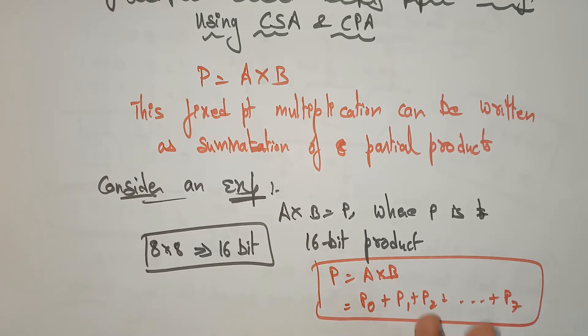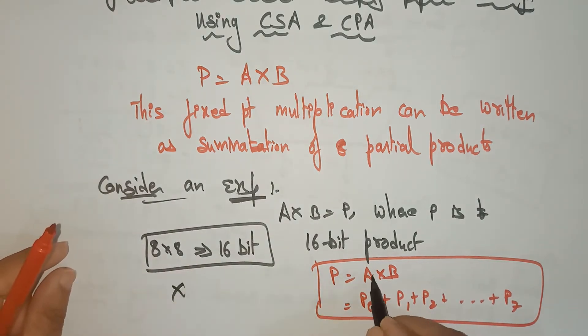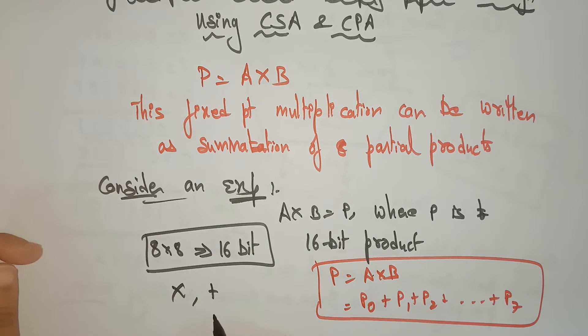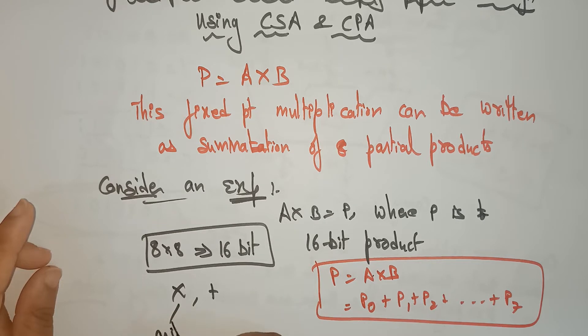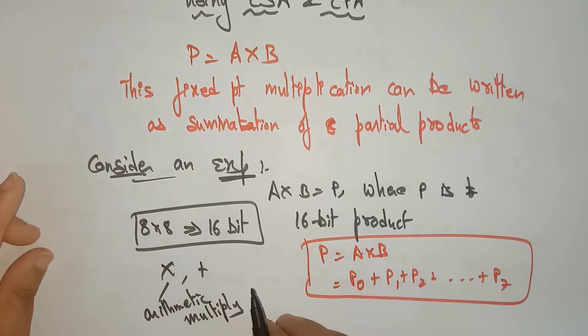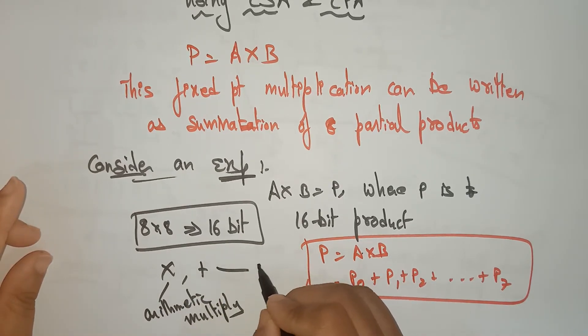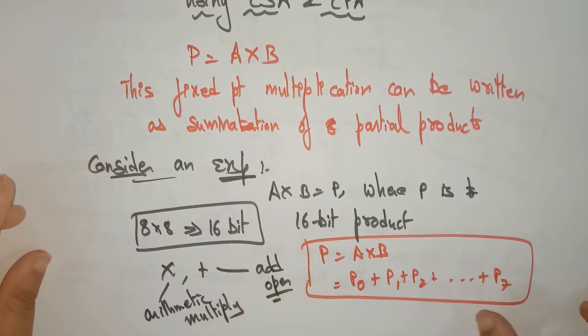The multiplication and addition — the arithmetic multiply and add operation — the 'into' operation is the arithmetic multiply and the 'plus' operation is the arithmetic add operation. Let's take a simple example so you will understand how the calculation is going to be performed and how you get the summation of eight partial products as a result.